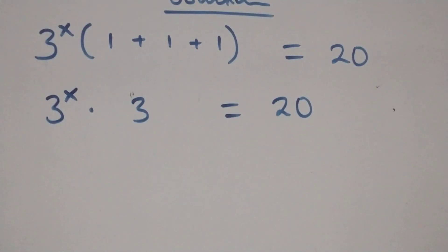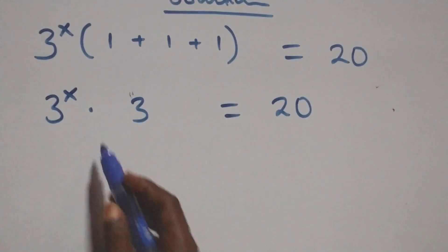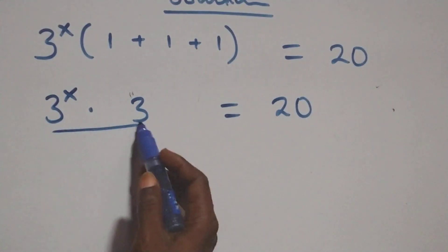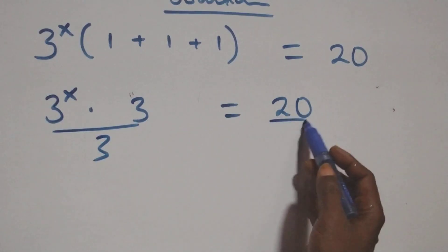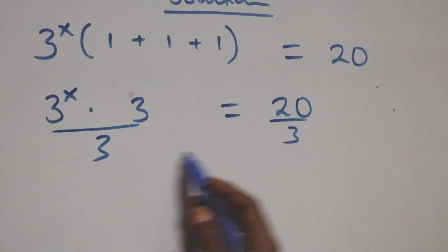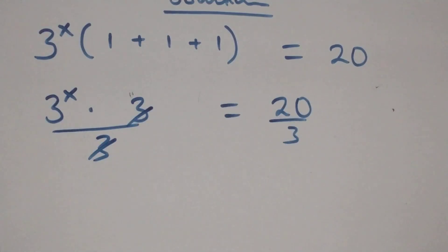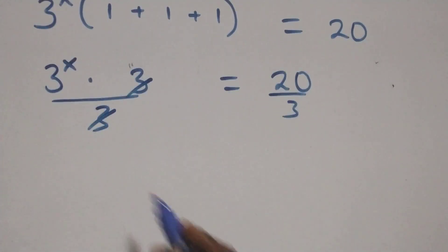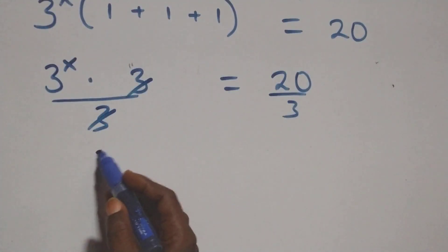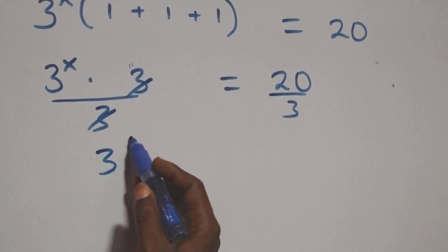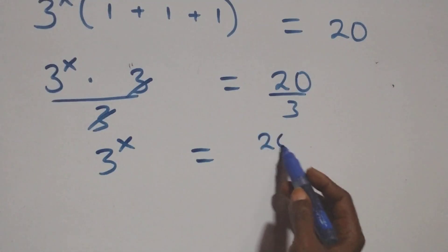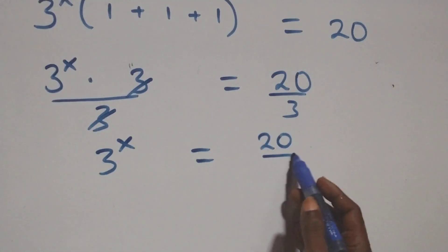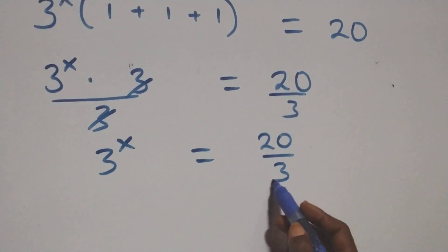We divide both sides by 3 — divide this side by 3, also divide this side by 3. The threes cancel each other, and we are left with 3 raised to power x equals to 20 over 3.